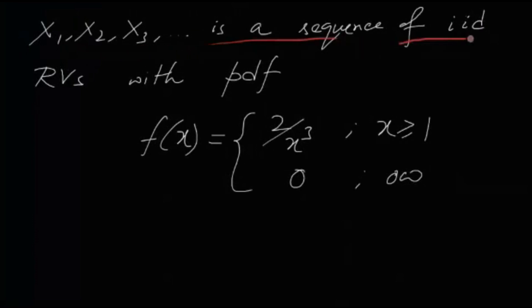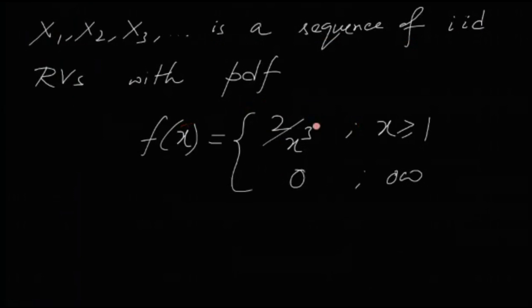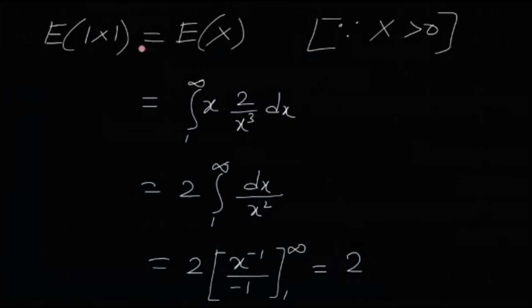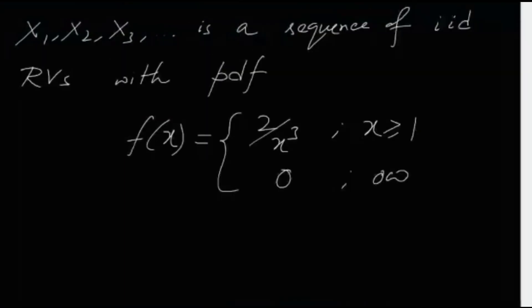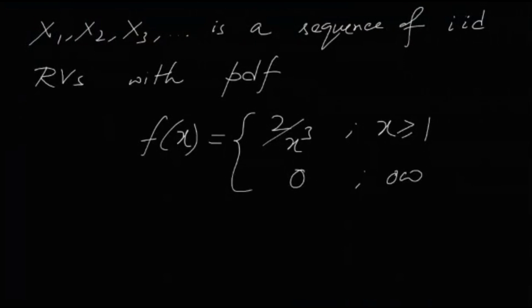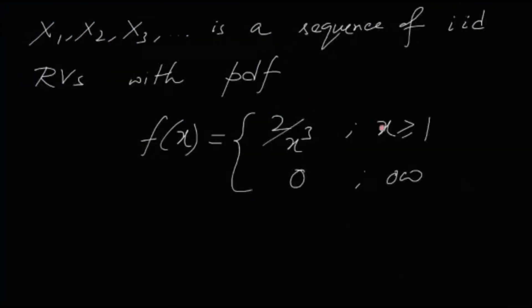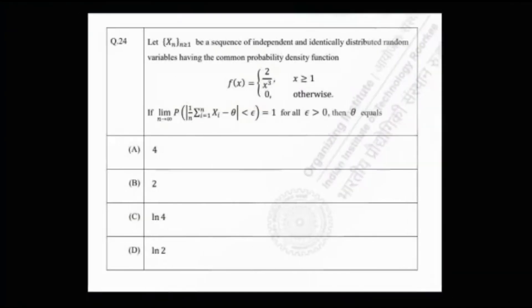So X₁, X₂, X₃, ... is a sequence of IID random variables with that PDF. Let us first find the expectation of this distribution. We check whether the expectation exists by computing E[|X|], which equals E[X] since x is clearly positive.